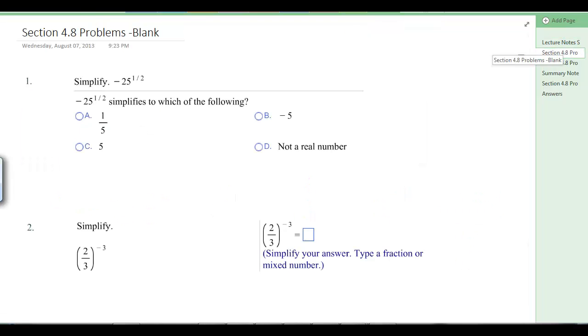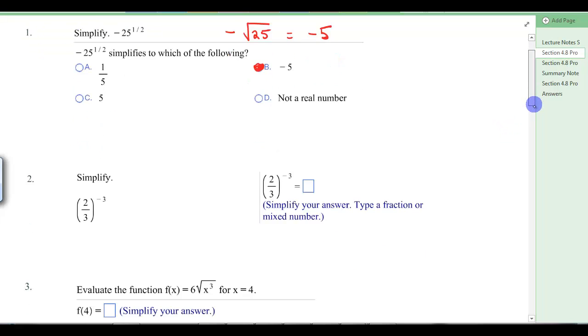Let's look at the problem set. When we have negative 25 to the 1 half, you want to recognize this is not in parentheses, so this means the negative of, we'll just say the square root of 25, that's easier to think about. Remember, 1 half power is the square root, so that's equal to negative 5.